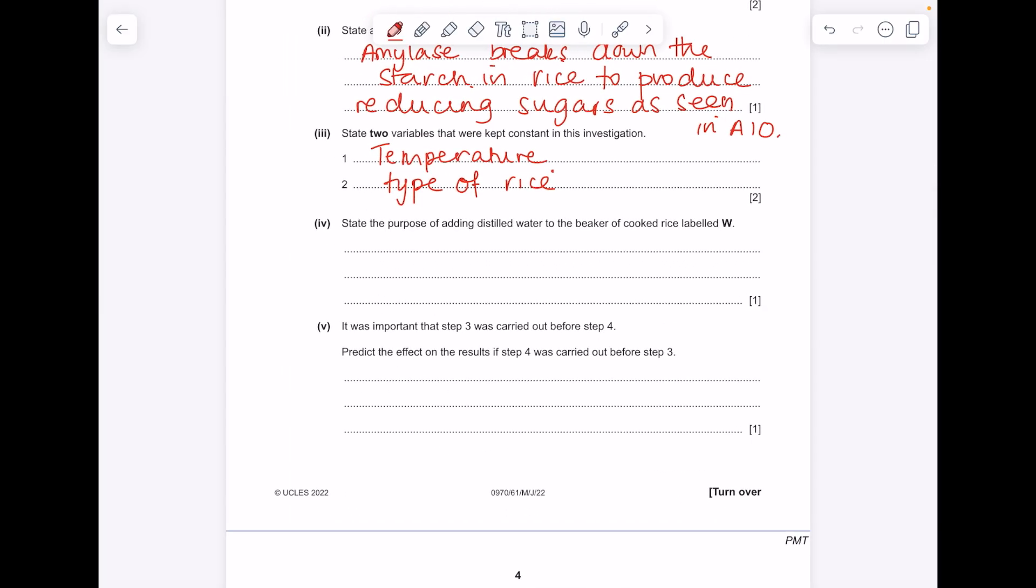State the purpose of adding distilled water to the beaker of cooked rice label W. When you're adding this distilled water as opposed to something like amylase, it's because you need a control experiment.